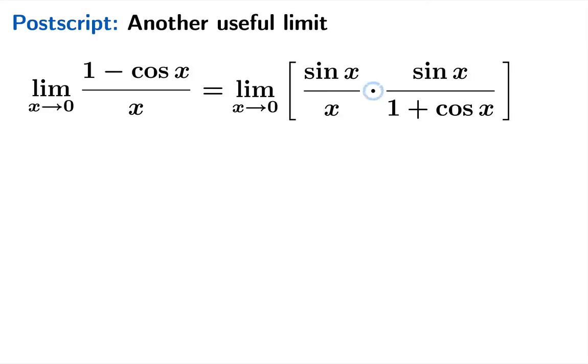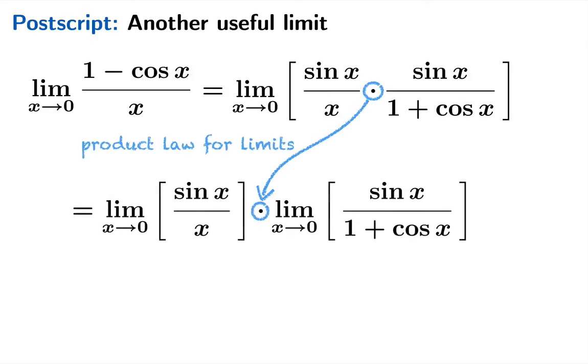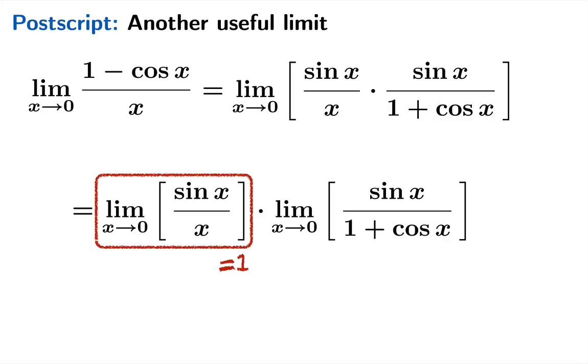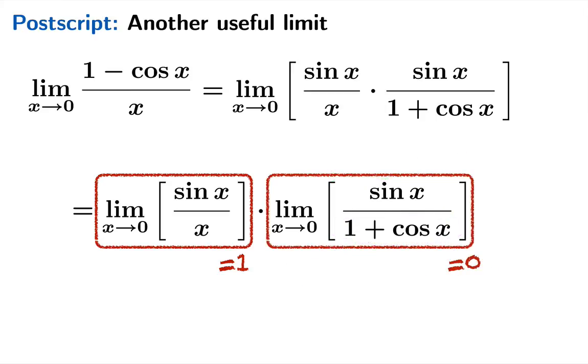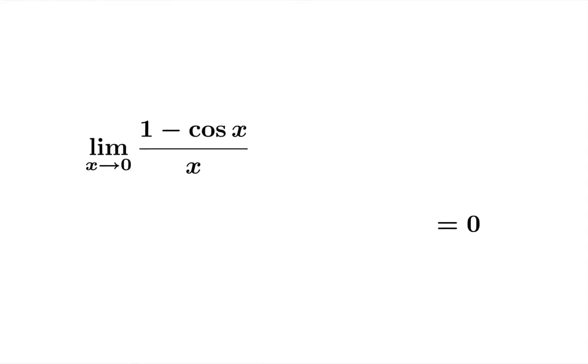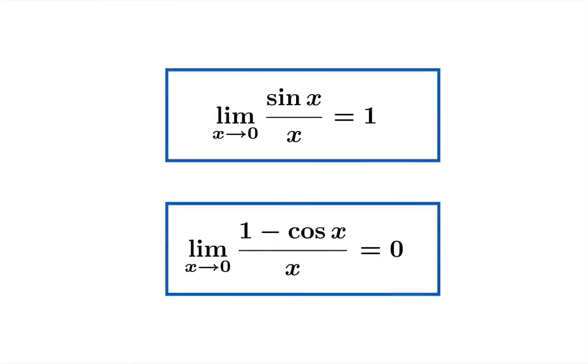And we can apply a limit law for products. Of course, this limit sine x over x as x approaches zero, we just figured out that limit is one. This other limit isn't that bad. The numerator goes to zero and the denominator goes to two. So actually this limit is just zero. And that means the product is zero and that's our limit. So these two limits will be very handy when we go to calculate the derivative of sine and cosine.